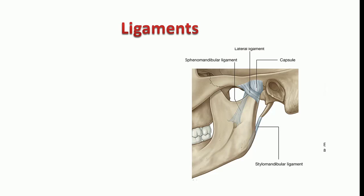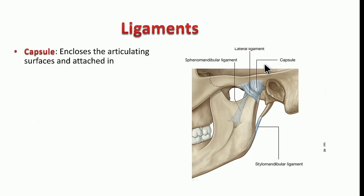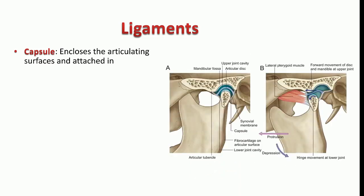Now coming to the ligaments of the joint. The first ligament we are going to discuss is the capsular ligament. The capsular ligament encloses the joint completely — medially, laterally, and also above and below. The attachments of the capsule are anteriorly to the articular tubercle, and posteriorly it is attached to the squamotympanic fissure.